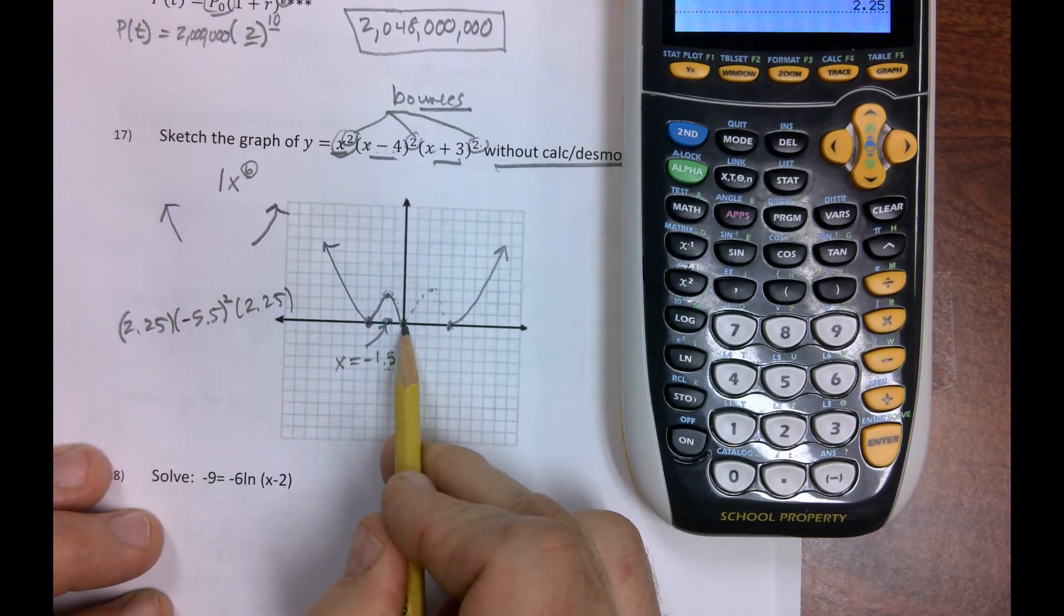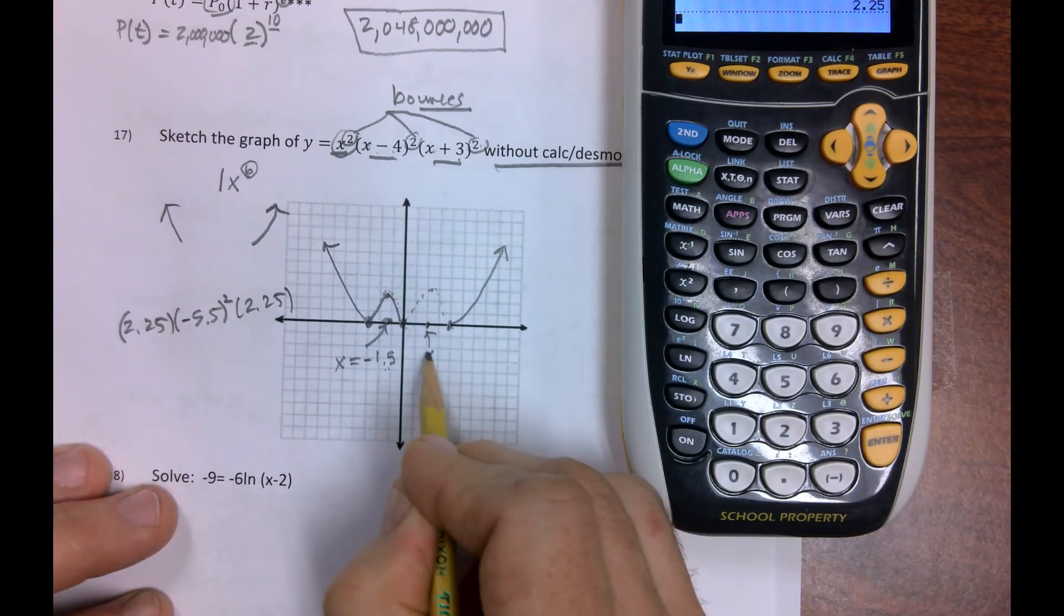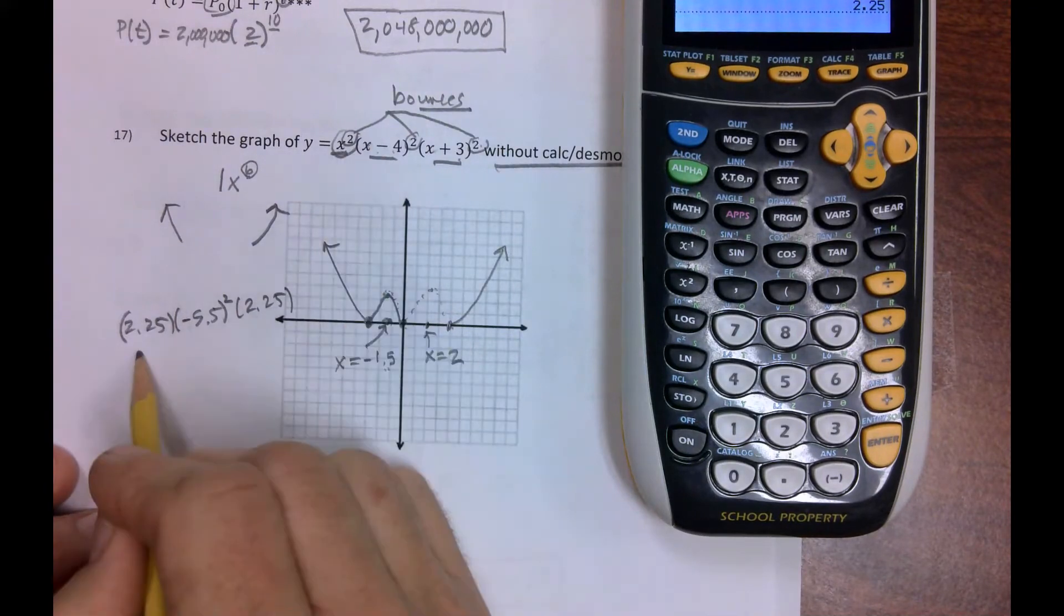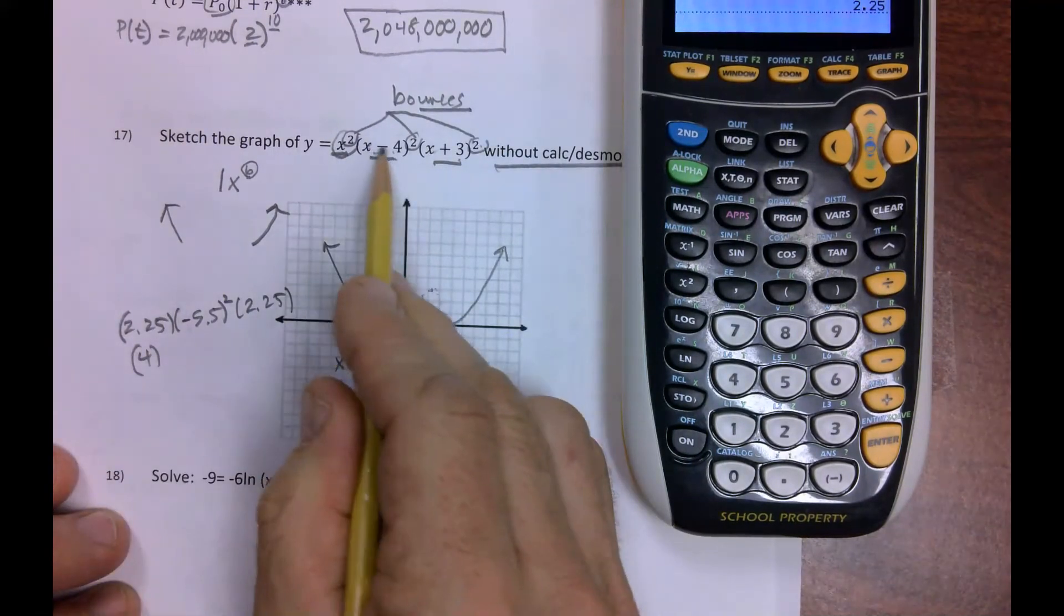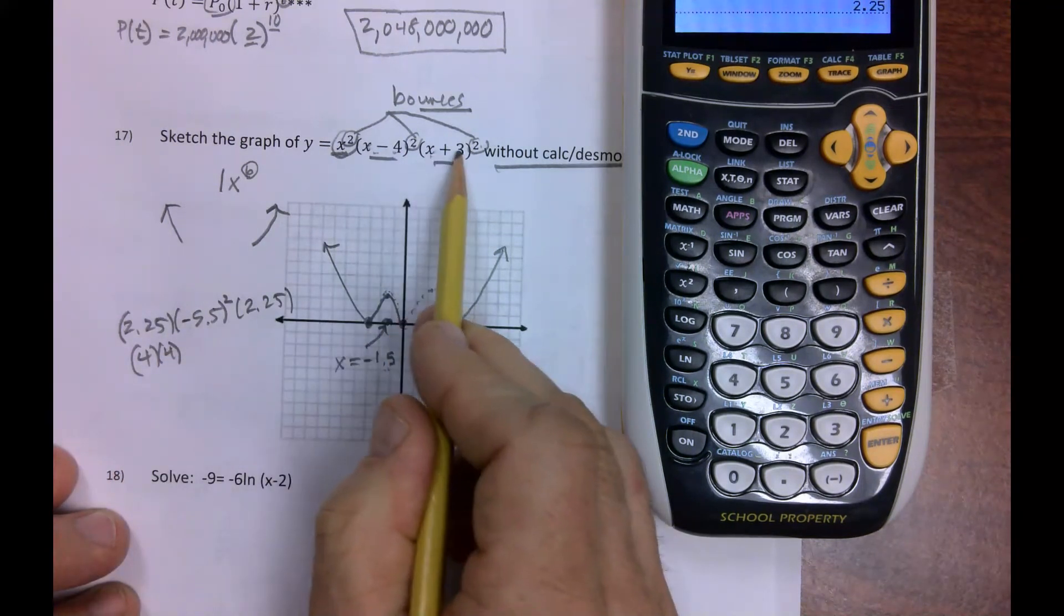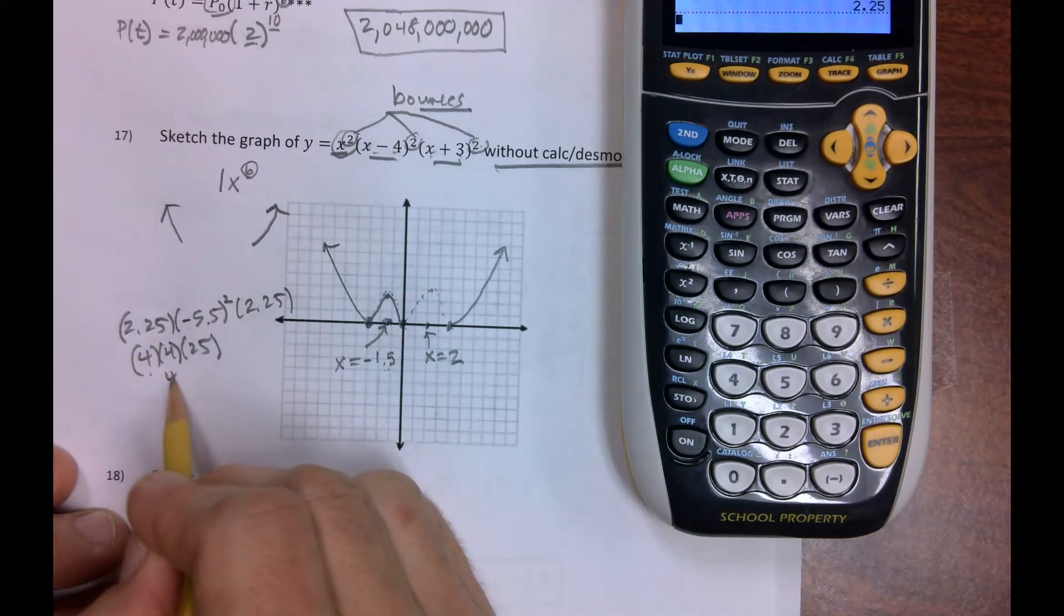This is a little easier, because this is 0 and 4. The halfway point would be 2. So we've got to let x equal 2 and plug stuff in. We should be able to do this in our head. 2 squared is 4. 2 minus 4 is negative 2 squared. It's another 4. 2 plus 3 is 5. 5 squared is 25.